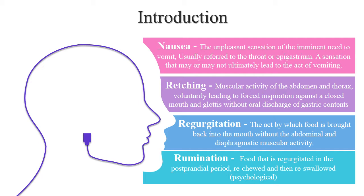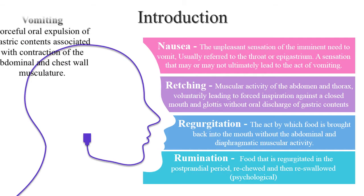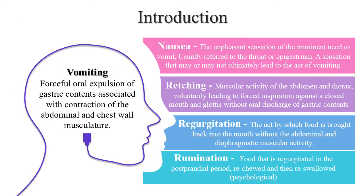The important thing in regurgitation is the absence of abdominal and diaphragmatic muscular activity. And last is Rumination — food that is regurgitated in the post-prandial period, re-chewed and then re-swallowed. It is mainly a psychological cause and is also found in animals. Vomiting is the forceful oral expulsion of gastric contents associated with contraction of the abdominal and chest wall musculature.